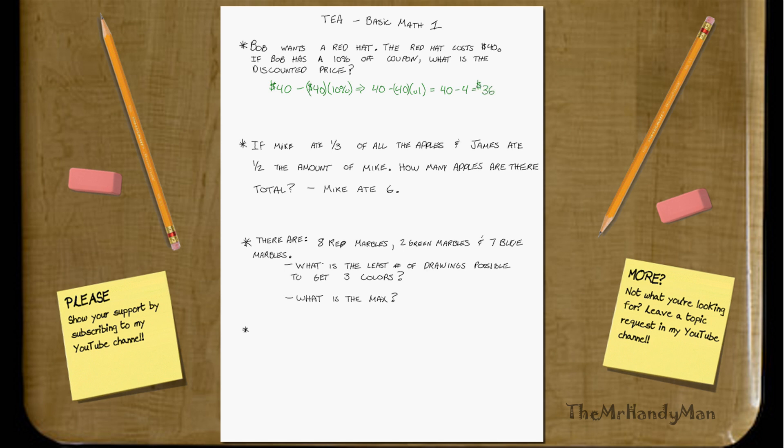Another approach would be to say $40 times 90%, which once again would look mathematically like 40 times 0.9, and that would equal 36 bucks as well. That's just saying I only want to see 90% of it.